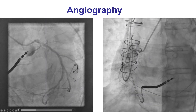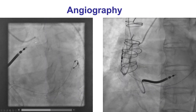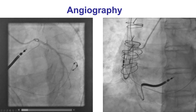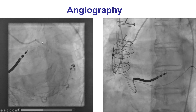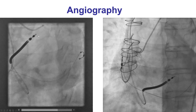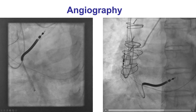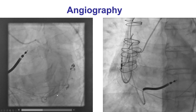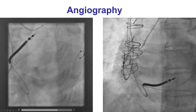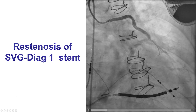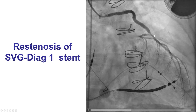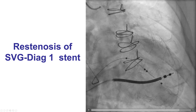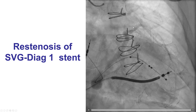This was the angiogram on this presentation, demonstrating a CTO of the LAD. This is a flush occlusion — we do not know for sure where the vessel is coming from, although there is some calcification. There is also a CTO of the right coronary artery. The circumflex is patent, supplying collaterals to the right coronary artery.